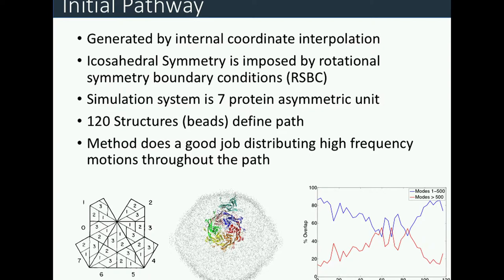To study this process, we simulated the asymmetric unit of this capsid using icosahedral symmetry boundary conditions, restricting the virus to remain perfectly icosahedrally symmetric. This mimics simulating a full capsid without the computational cost. We generate a structural pathway between the two end states through a somewhat complicated interpolation. This offers some benefits over the standard steered molecular dynamics approach where you apply force to drive one conformation to the other.